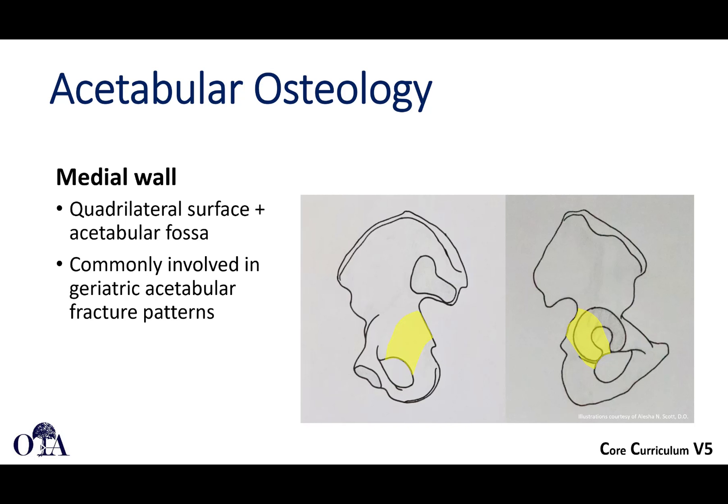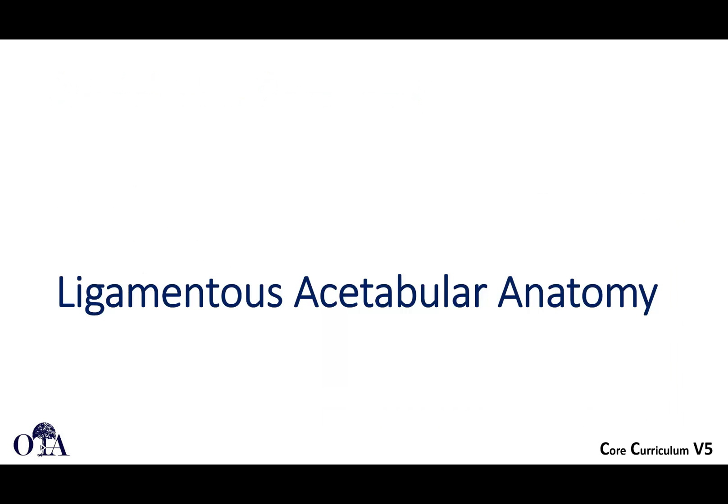The quadrilateral surface, as shown here, is commonly involved in geriatric acetabular fracture patterns. Sometimes you'll get a protrusio pattern where the head displaces medially into the pelvis — this occurs typically through a fracture of the quadrilateral surface. When you treat these, it oftentimes requires some type of direct fixation or buttressing of that quadrilateral surface. So it's an important area to understand.